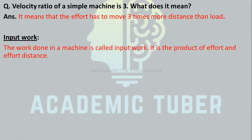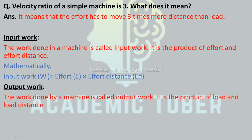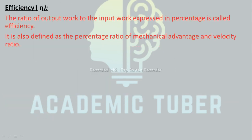Input work: the work done on a machine is called input work, and it is the product of effort and effort distance. Mathematically, input work Wi equals effort E multiplied by effort distance ED. Output work: the work done by a machine is called output work, and it is the product of load and load distance. Mathematically, output work Wo equals load L multiplied by load distance LD.